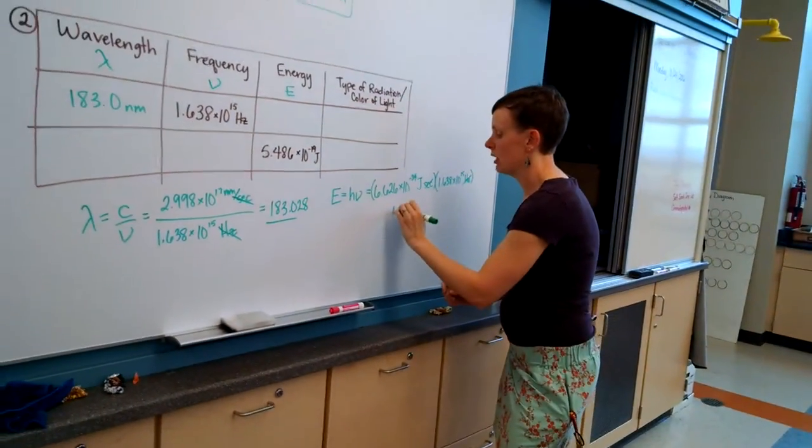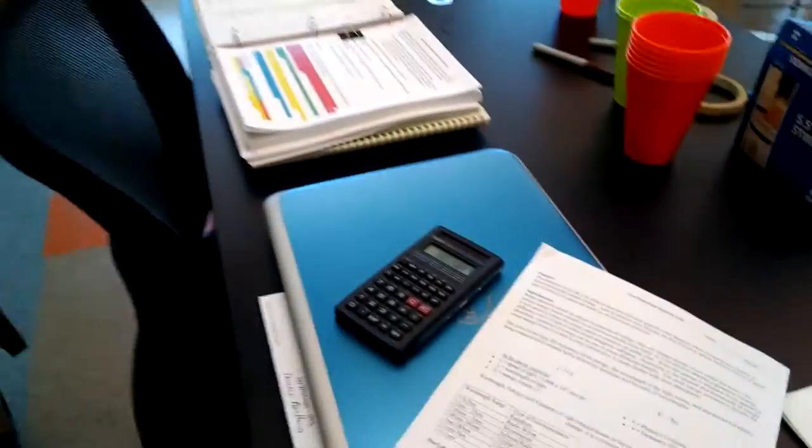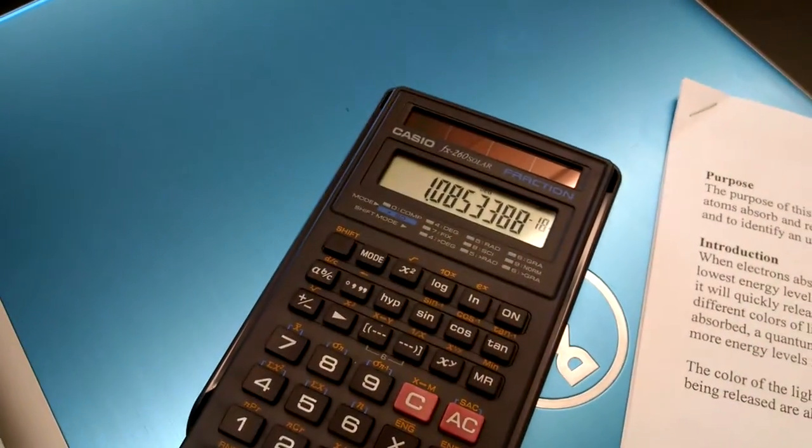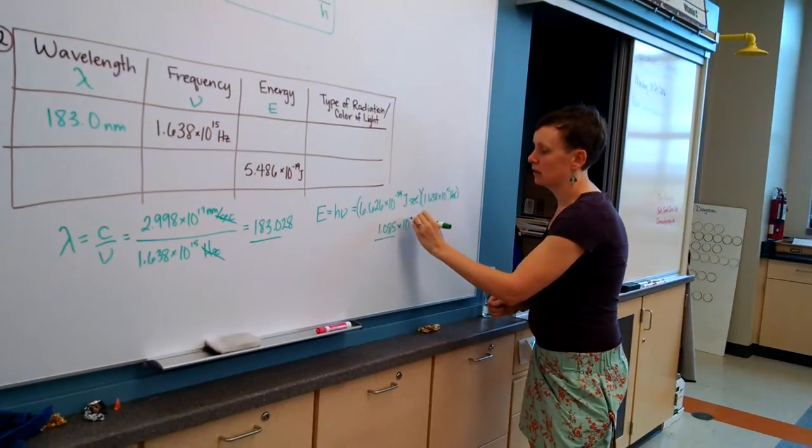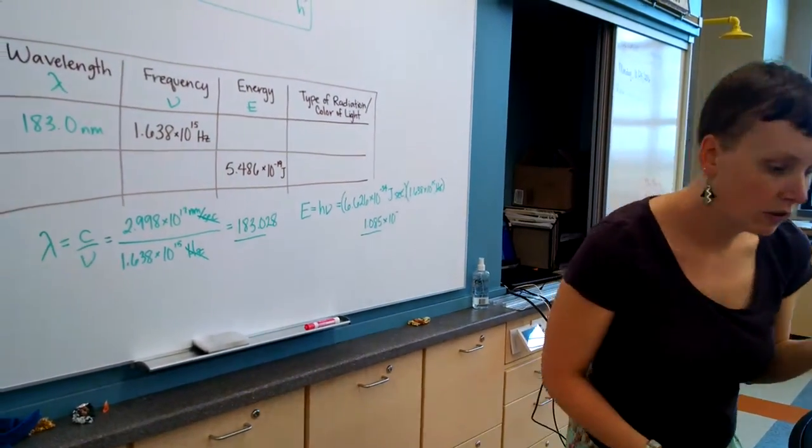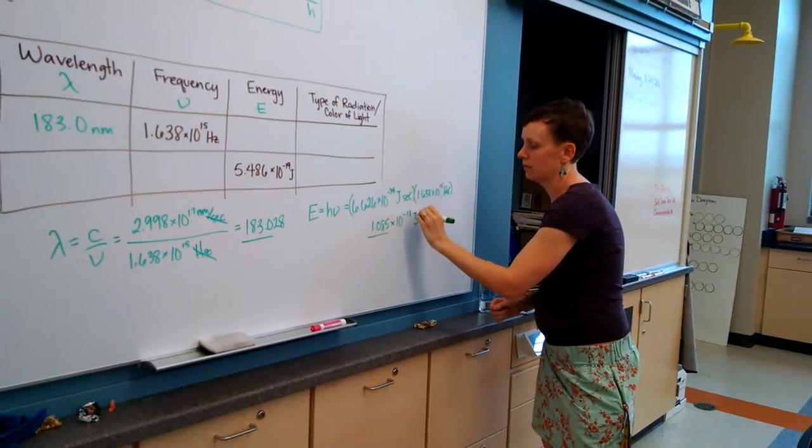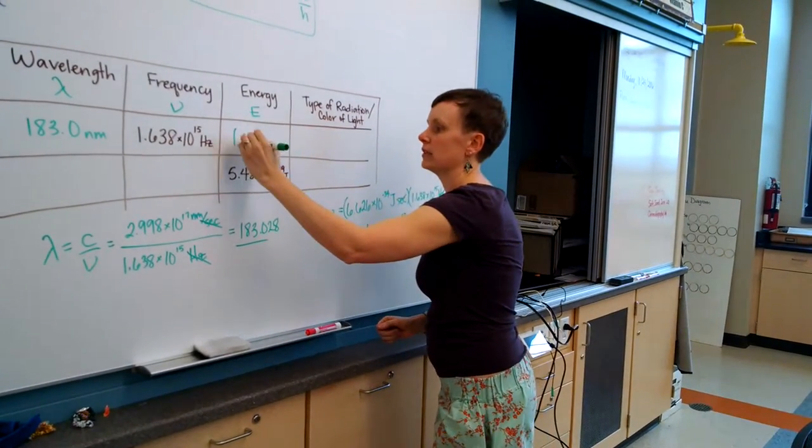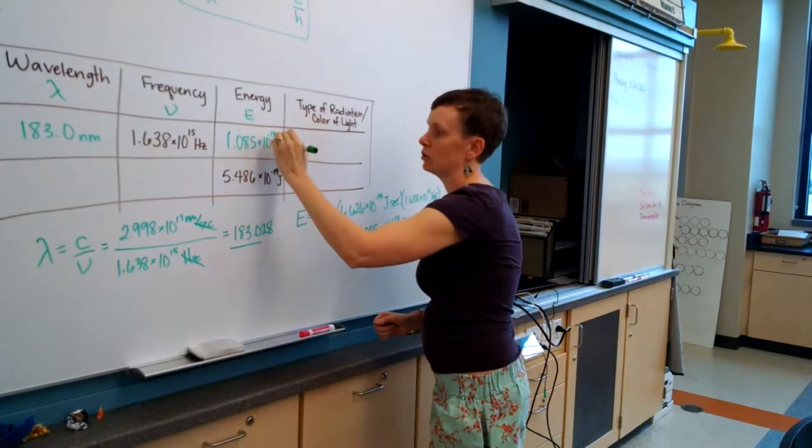After the 5 was a 3, so that's going to be my 4 sig figs here, 1.085 times 10 to the negative 18th, and my unit is joules. 1.085 times 10 to the negative 18th joules.